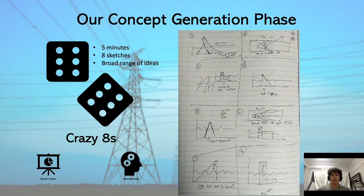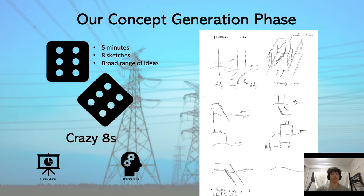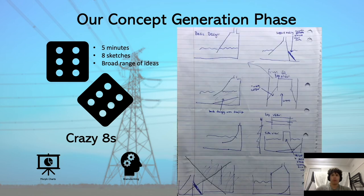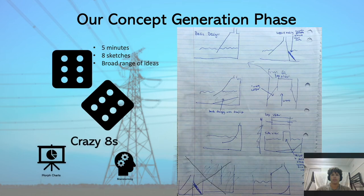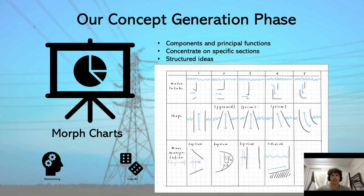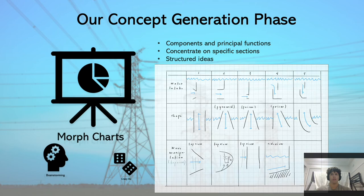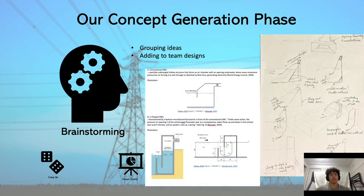Initially we used the crazy eights technique, featuring each group member spending five minutes drawing eight rough sketches of possible designs to generate a broad range of ideas quickly. The morph chart lists the components and principal functions which our design must fulfill and contain, allowing the group to concentrate specifically on sections of the design and convey ideas in a structured form. Finally, brainstorming brought together the ideas of all group members collectively, allowing more organized designs to be formed by sharing insights and adding to other concepts.